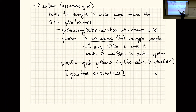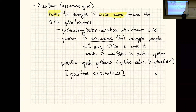So that's how the stag hunt models positive externalities of public goods. The key contrast with hawk-dove is that in the stag hunt it's better for more people to play stag — every person who plays stag generates more benefits for everyone else. Any questions about that?